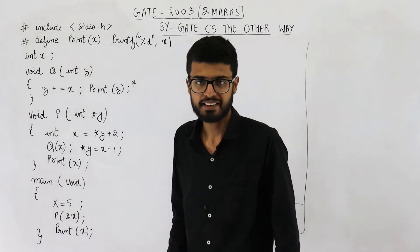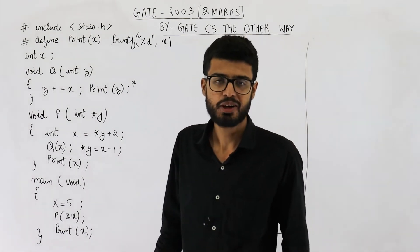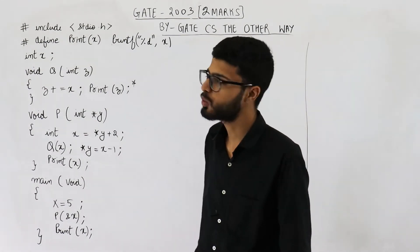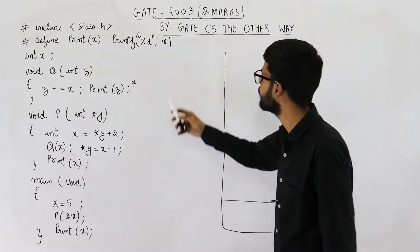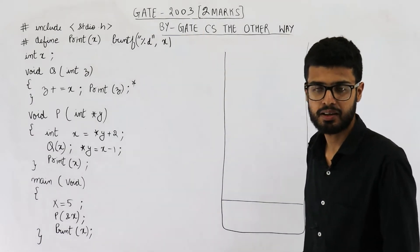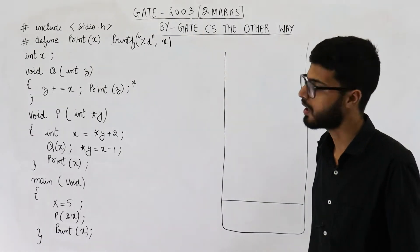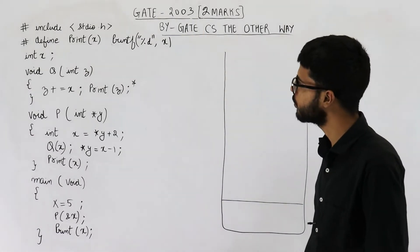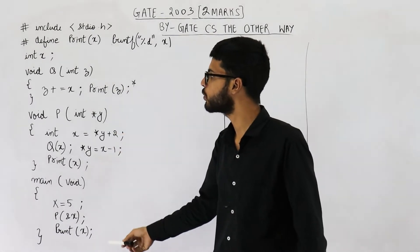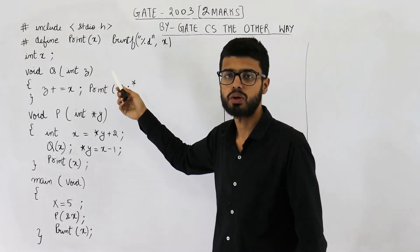Hello dear people, welcome back. Here in this video, I am going to explain a very interesting question from the GATE 2003 exam. It is for two marks. The question says: find the output of this code.